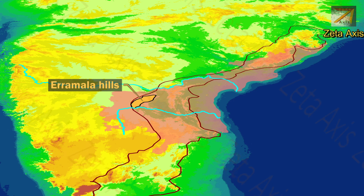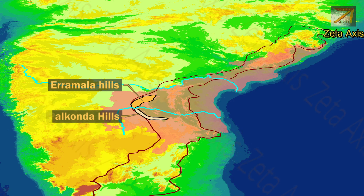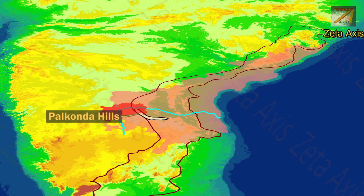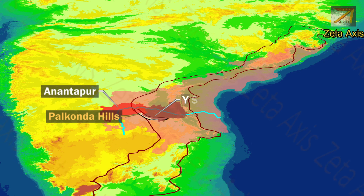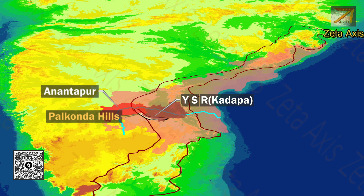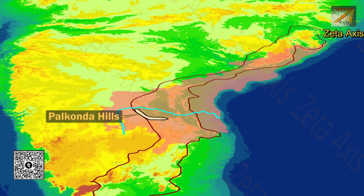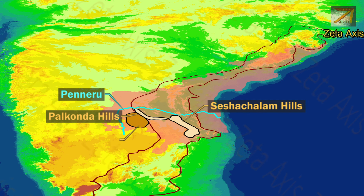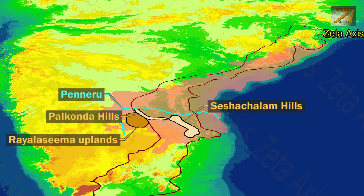The next important mountain range is the Palkonda mountains, whose name means 'milk mountains.' The Palkonda hills run in a north-west to south-east direction and are spread mainly across Anantapuram and Kadapa districts of Andhra Pradesh. The south-east extension of the Palkonda range is the Seshachalam hills. The Peniru river forms the northern margin of the Palkonda hills, which are bounded by Rayalaseema mountains in the west and Nandyal valley in the north-east.